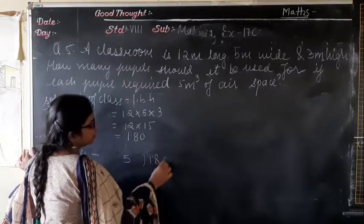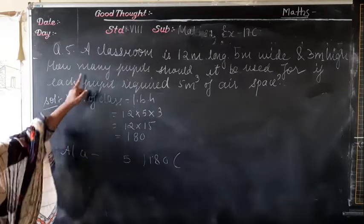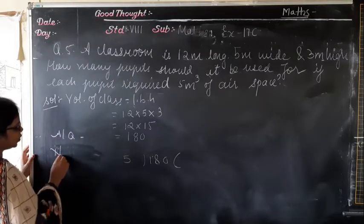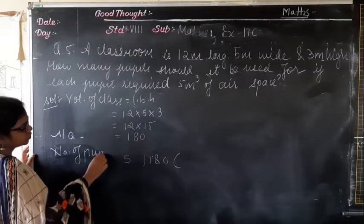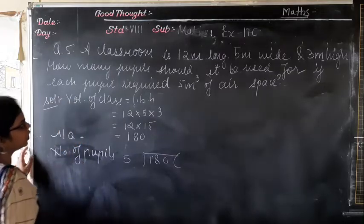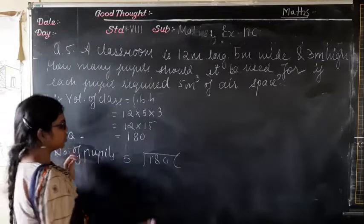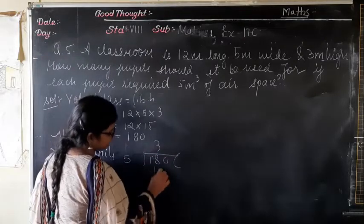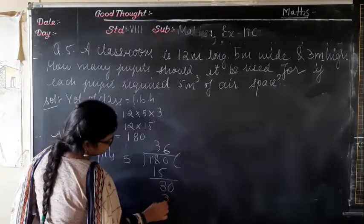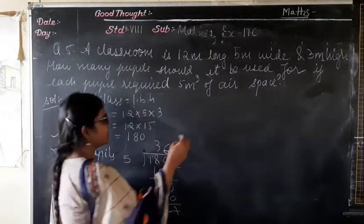12 × 5 = 60, and 60 × 3 = 180. So volume = 180 m³. How many people should use it if each person requires 5 m³ of air space? Number of people = 180 ÷ 5 = 36. The answer is 36 people.